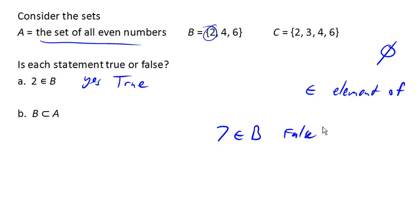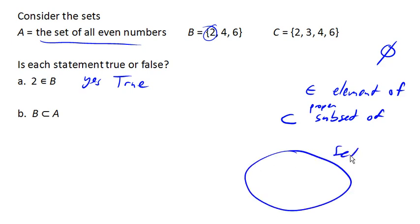Now this second statement here, again, we need to know what this symbol means. So this symbol means subset of, and more correctly, it is a proper subset of. Now the idea of a subset is that if you have a bunch of items, let's say here is a big set of items, then a subset is a smaller collection that contains elements from the larger set. That's the idea of a subset.